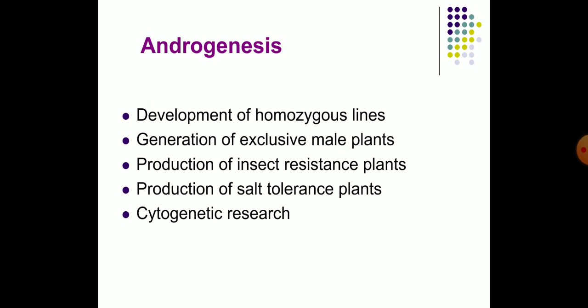Developed haploids are screened for desired resistance and then diploidized. Plant species with salt tolerance are needed for their cultivation in some areas. Anther cultures have resulted in some varieties of rice and weeds with good salt tolerance. Androgenesis is useful in several areas of cytogenetic research, including determination of the nature of ploidy and determination of basic chromosome number.